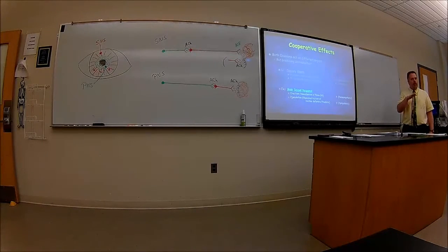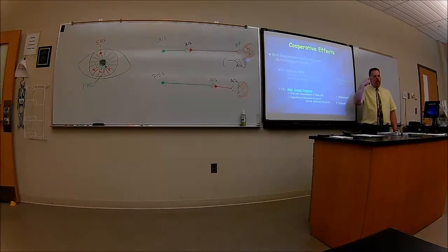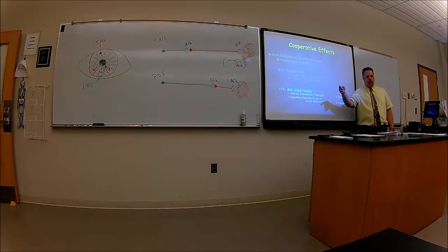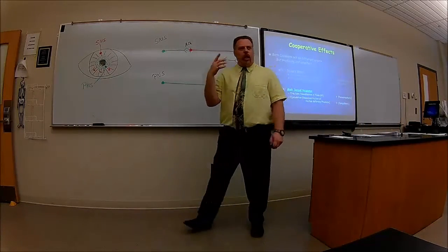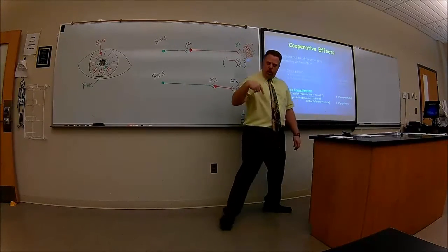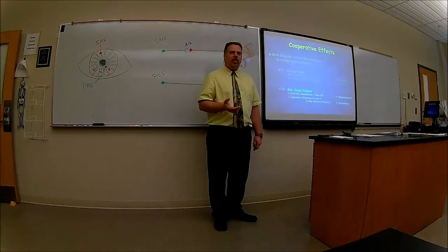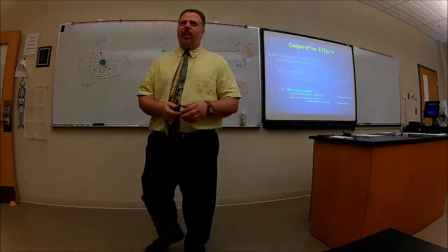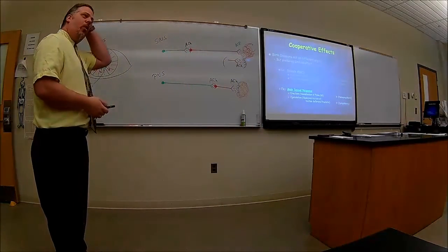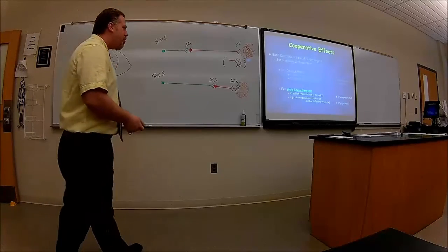The parasympathetics in the sacral region come from S2, S3, S4 — the craniosacral outflow. My mnemonic: 'S2, 3, 4 keeps the penis off the floor.' You'll remember that just like 'C3, 4, 5 keeps the diaphragm alive.' Cranial nerves 3, 7, 9, and 10 also carry parasympathetic fibers.